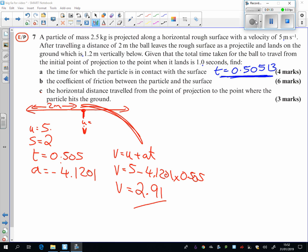Now, that's the final velocity for this part, but it's the initial velocity for this part here. And as we're ignoring air resistance or anything like that, this distance here is just that speed, 2.91, times by how long that part of the journey was.